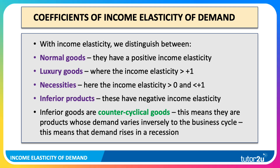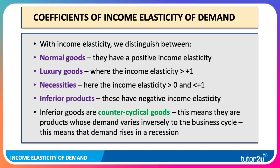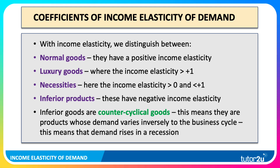With necessities the income elasticity is between zero and plus one. For example, a 20% rise in income leads only to a 5% increase in demand. Inferior goods have a negative income elasticity of demand — they're known as counter-cyclical goods. That means these are products whose demand goes down when the economy is growing but tends to go up in an economic downturn or recession.